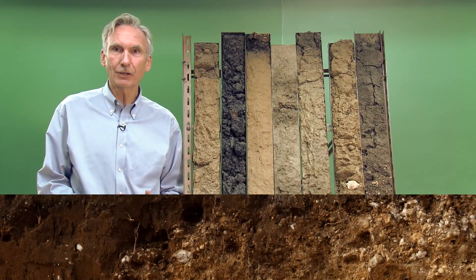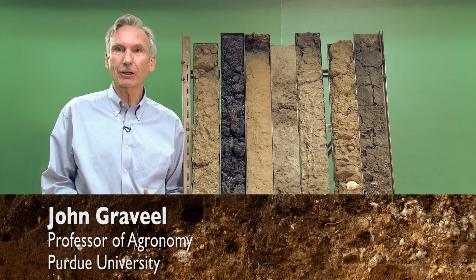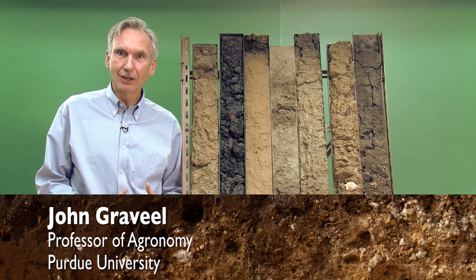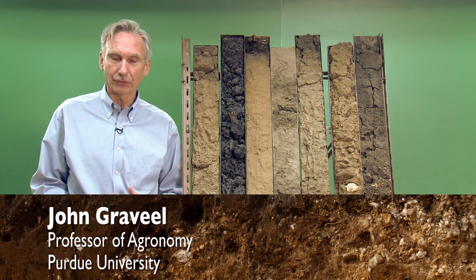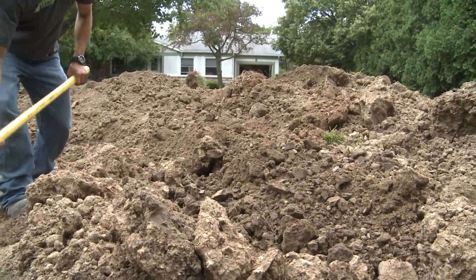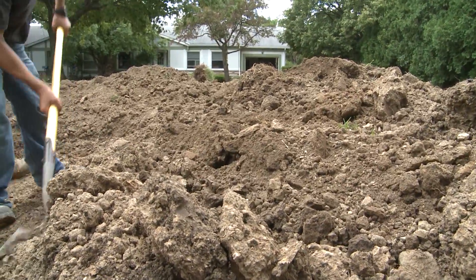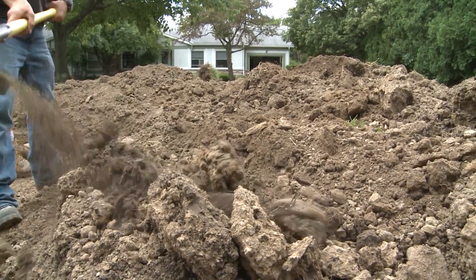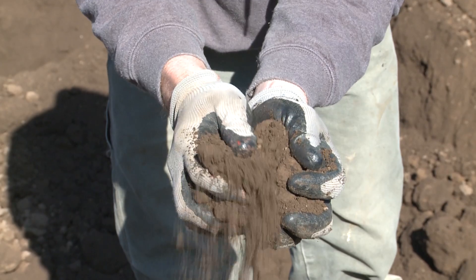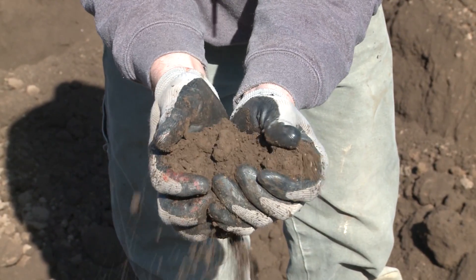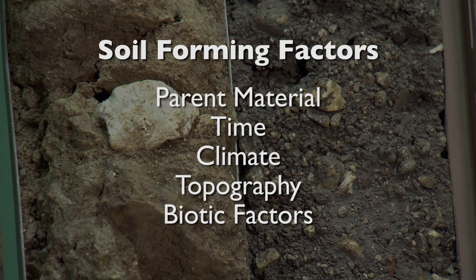What we're going to do today is talk about soil origins and the formation of soils. Unconsolidated material which sits on the surface of the earth is actually impacted by five soil forming factors: parent material, time, climate, topography, and native vegetation or biotic factors.